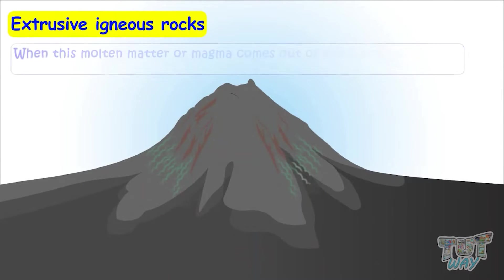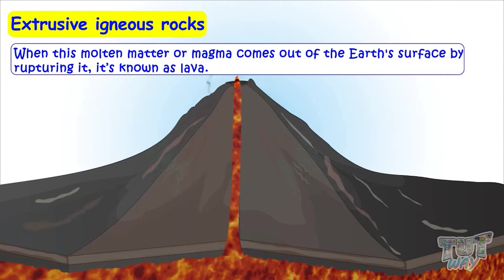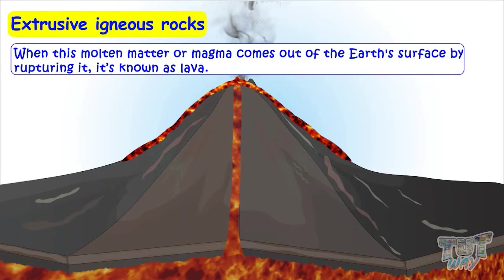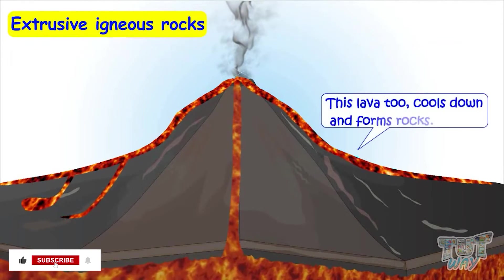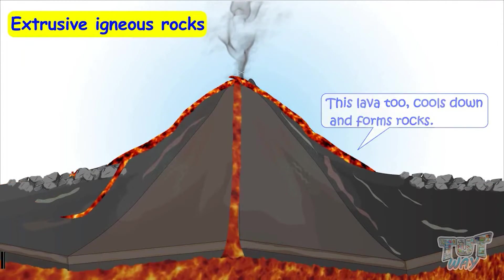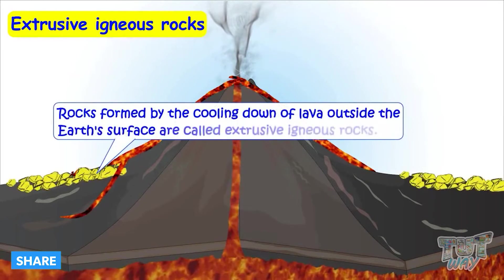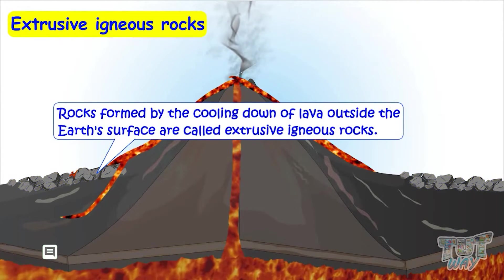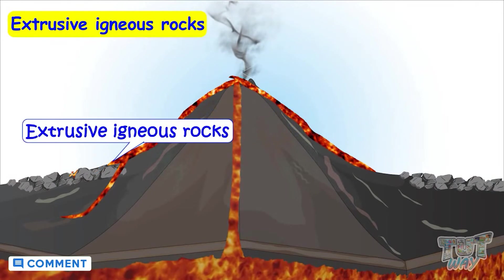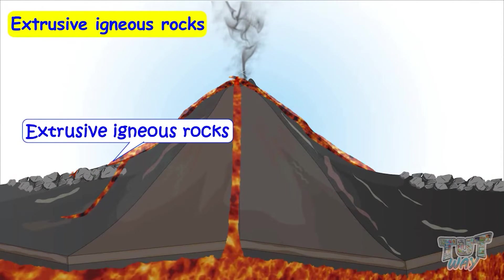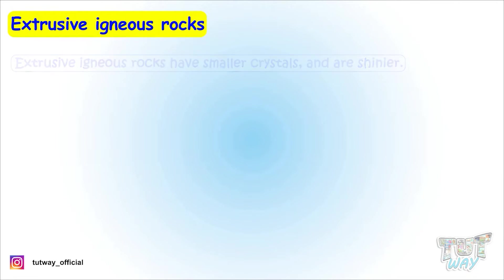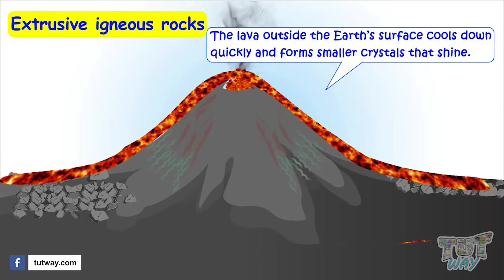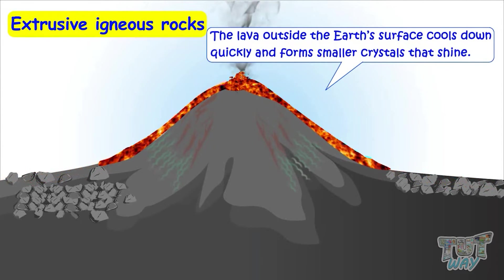Lava. When this molten matter or magma comes out of the Earth's surface by rupturing it, it's known as lava. This lava too cools down and forms rocks. Rocks formed by the cooling down of lava outside the Earth's surface are called extrusive igneous rocks. Extrusive igneous rocks have smaller crystals and are shinier, because the lava outside the Earth's surface cools down quickly and forms smaller crystals that shine.